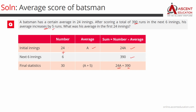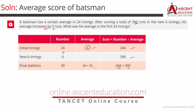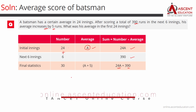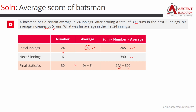The average increases by 5, so the new average is going to be A plus 5. Applying number into average equals sum to the 30-innings row: 30 into (A plus 5) equals 24A plus 390.